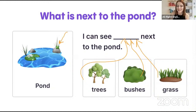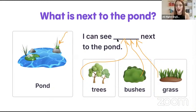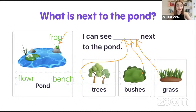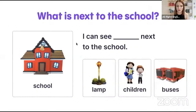Maybe you can see some stones, some other animals. Let's finish the sentence together: I can see trees, I can see bushes, I can see grass, I can see a frog, I can see a bench, I can see a flower. Flower, bench, frog, trees, bushes, grass — yes, we can see many things next to the pond!